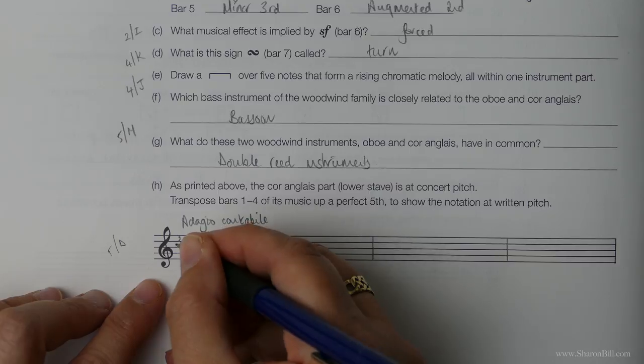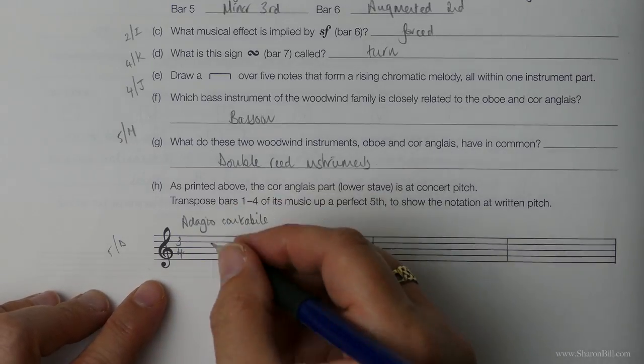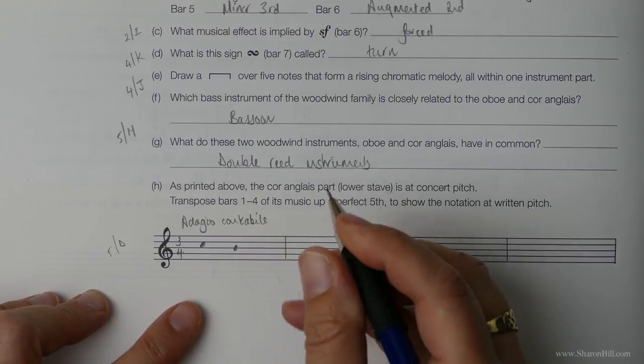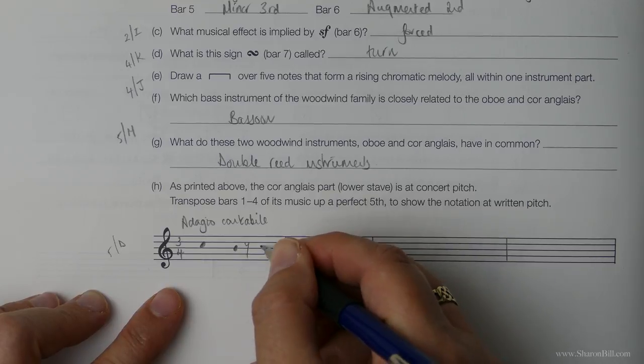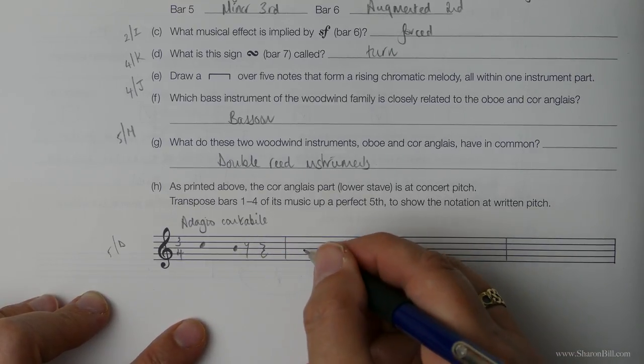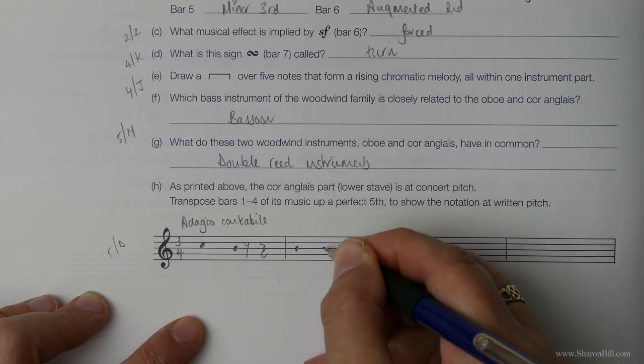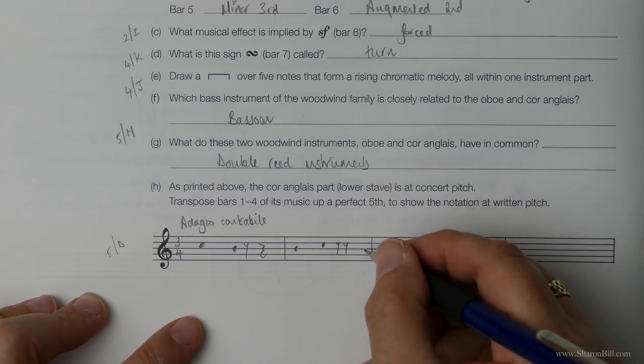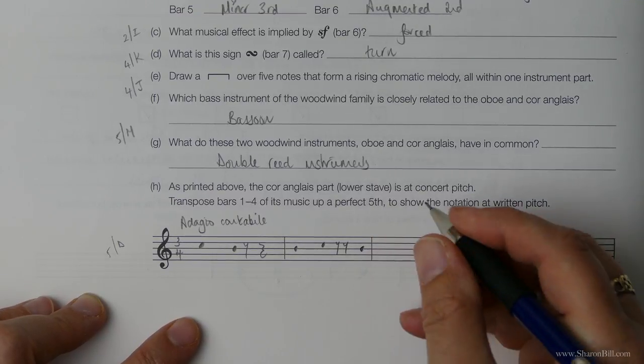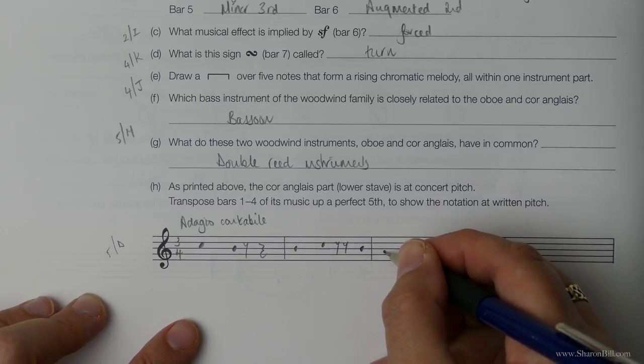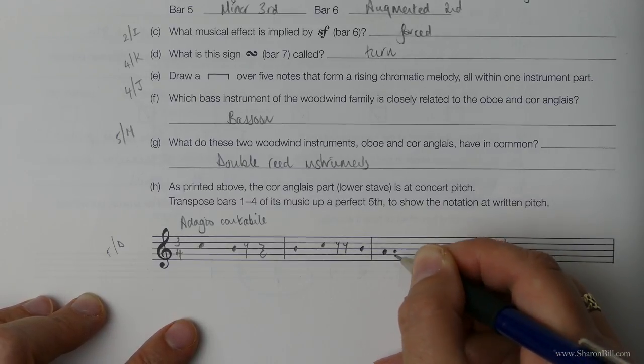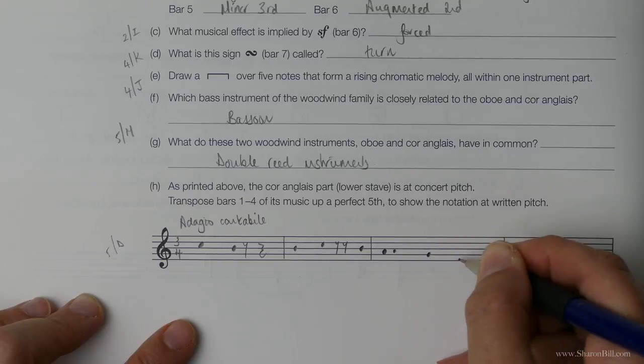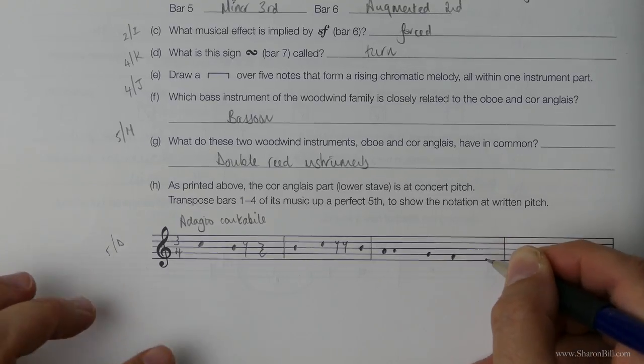So we've got a time signature of three, four. Should have done that before really. So we've got a C, B, rest, rest. B, C, two quaver beats, two eighth note rests. Down a step to the B. The A, down a step, is a dotted note. Down a step to the G. Down a step to the F. And now it's the F again.